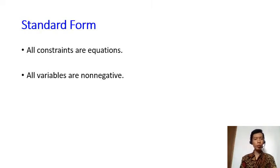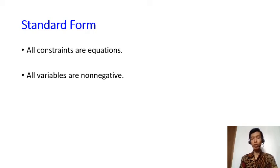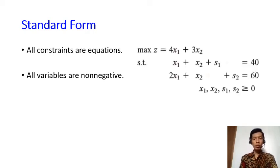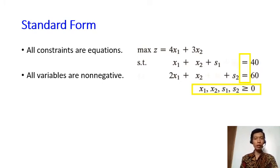A linear programming problem is in standard form if it satisfies two requirements. First, all constraints must be equations — we cannot have inequalities as constraints. Second, in the sign restriction part, all variables must be non-negative. Let's look at an example. This model is already in standard form because all constraint signs are equalities, and in the sign restriction part all variables are non-negative, meaning greater than or equal to zero.